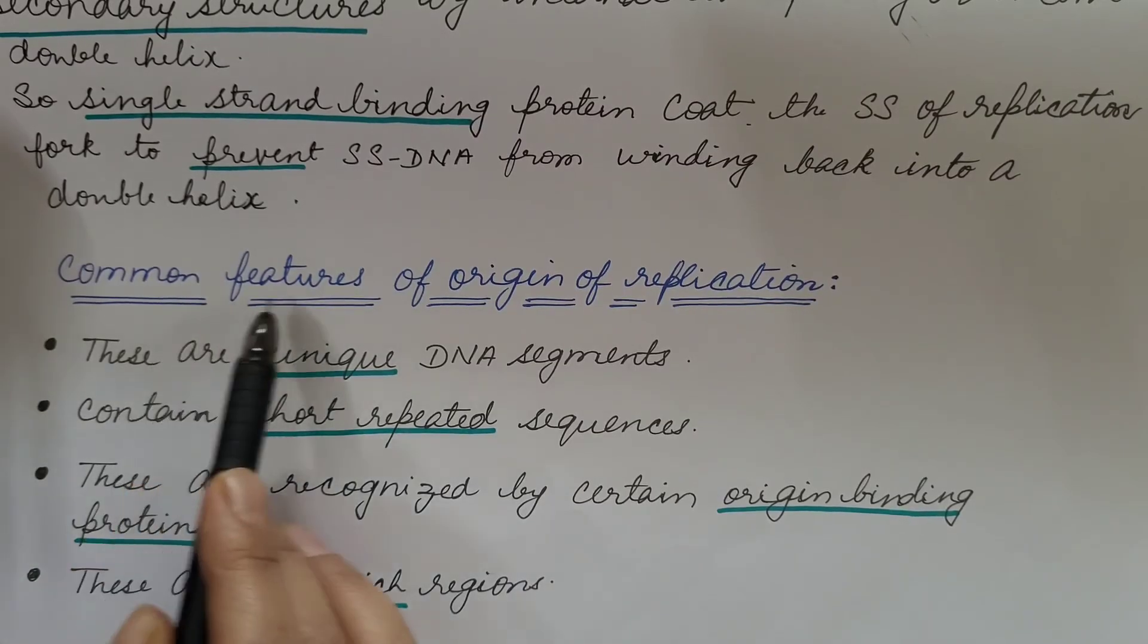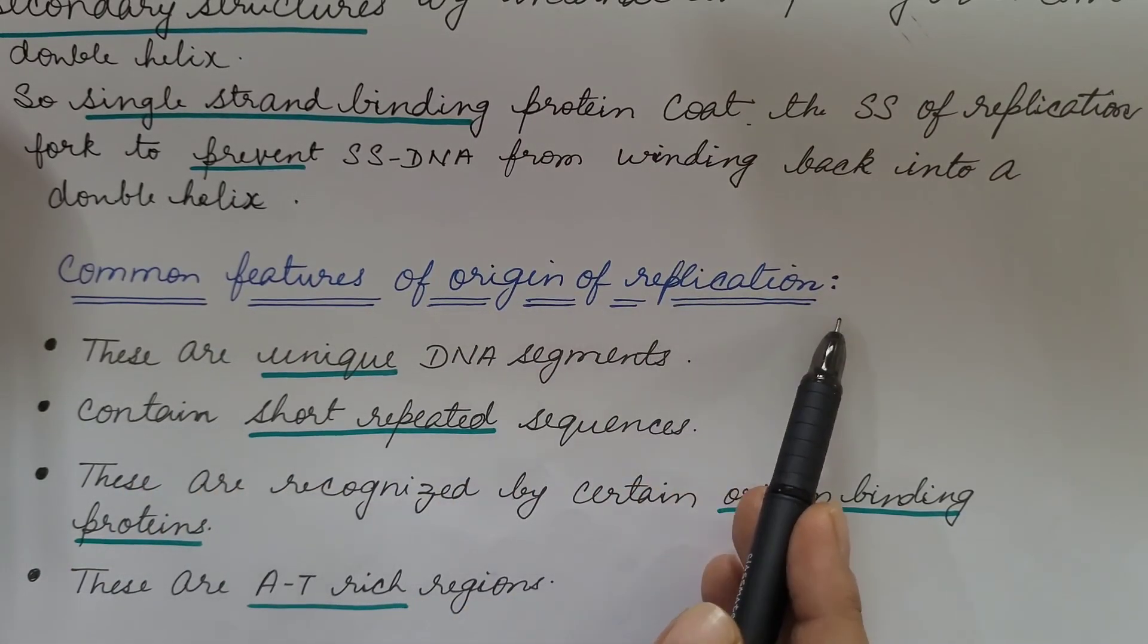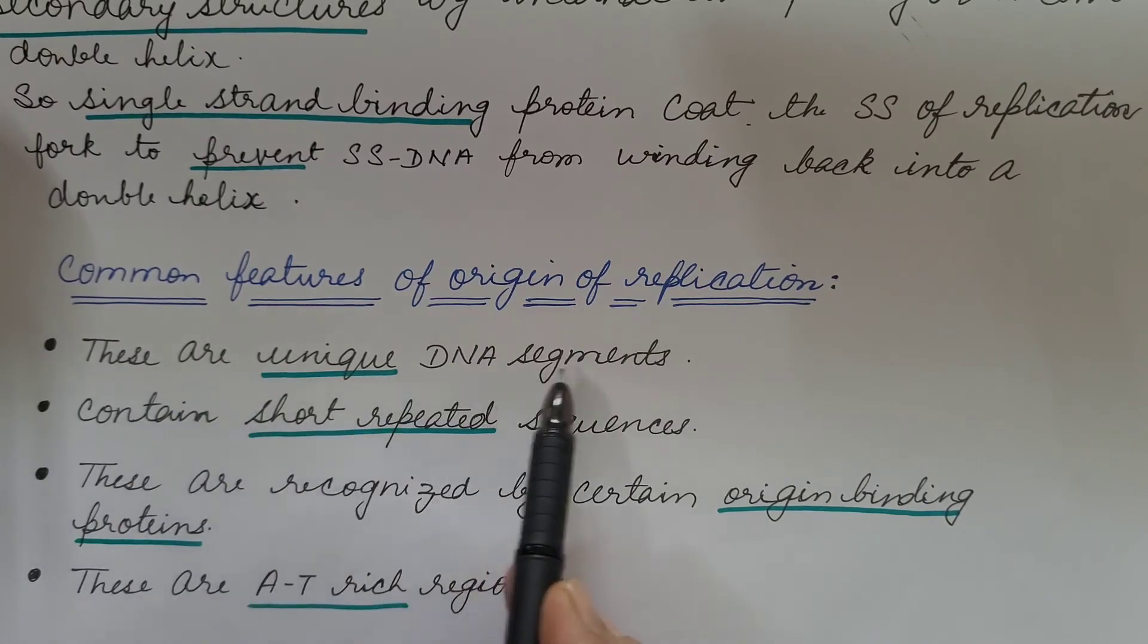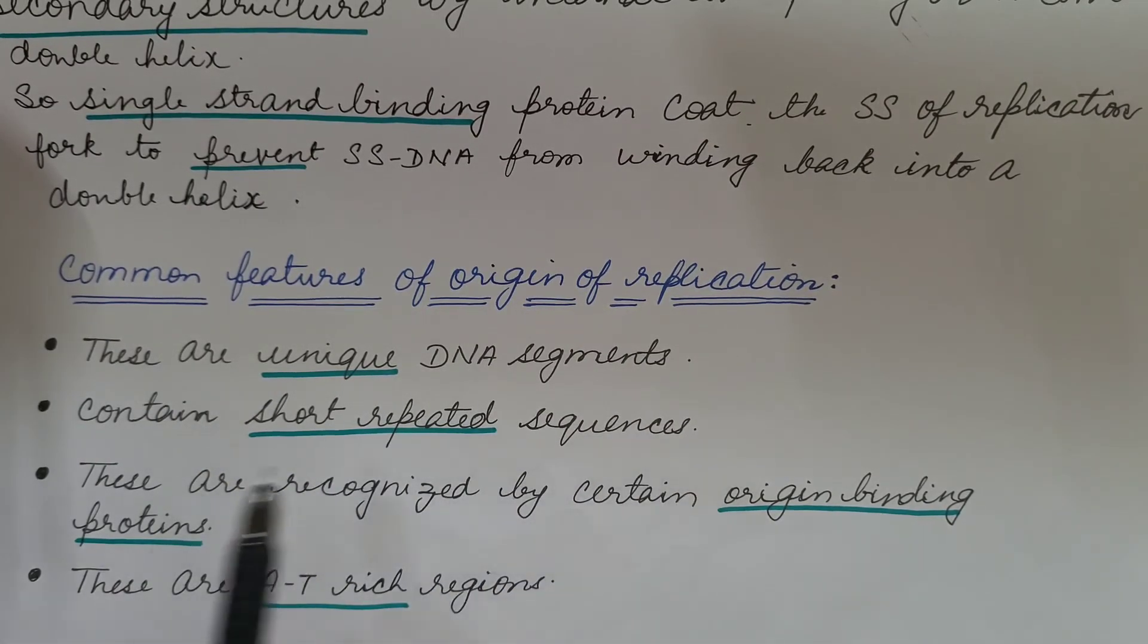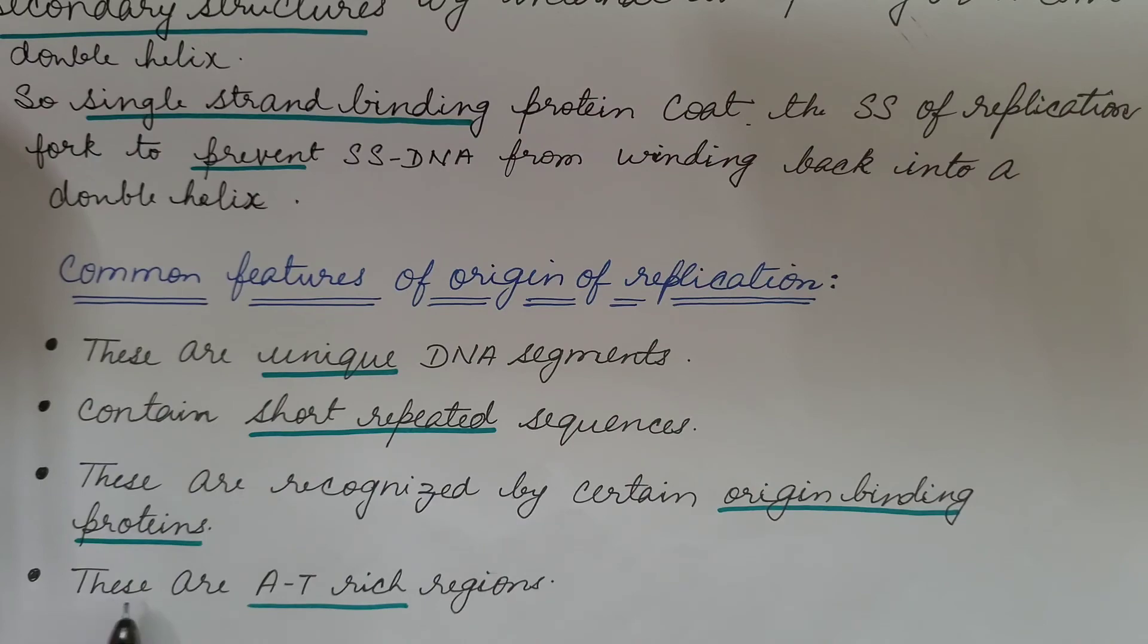Now let us summarize common features of origin of replication. These are unique DNA segments. These contain short repeated sequences. These are recognized by certain origin binding proteins and these are AT-rich regions.